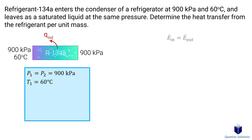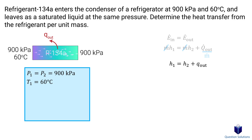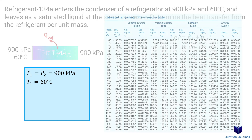Let's start with our energy balance equation. Since the refrigerant is flowing through a pipe, we have mass flow and enthalpy for the input. On the output side, we have heat output along with mass flow and enthalpy. Since the question wants us to find the heat output per unit mass, we need to divide everything by mass flow. Now we can use the refrigerant tables to figure out the enthalpy values.